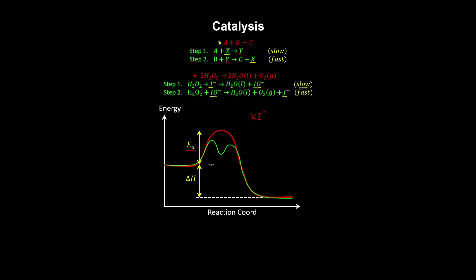The catalyst created a multi-step pathway to the reaction that has a lower activation energy. The activation energy for the slow step is larger than that of the fast step. The addition of the catalyst did not change the energy of the reactants and products, and the net concentration of the catalyst in this reaction is constant because it's consumed and regenerated.